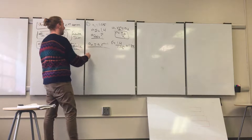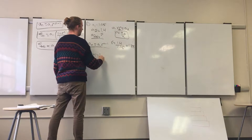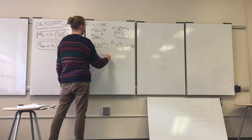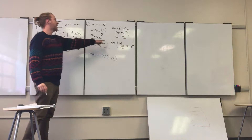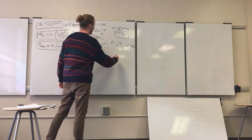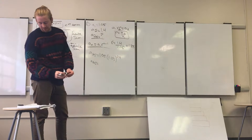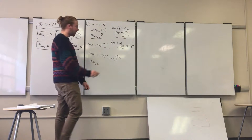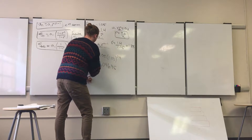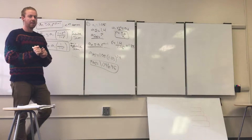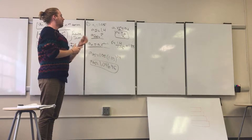Now that we have our r value, we can plug into the nth term equation. A_sub_25 equals A_sub_1, which is 1.05, times r, which is 1.33, to the (n minus 1) power. Since n is 25, that's 25 minus 1 equals 24. You should get that the 25th term, A_sub_25, is equal to 1,046.45.